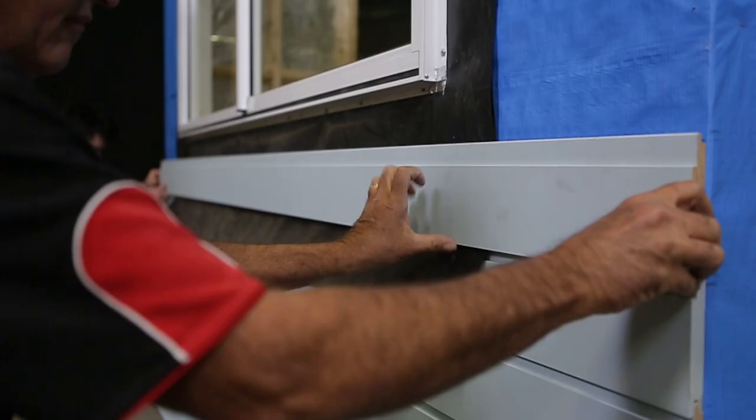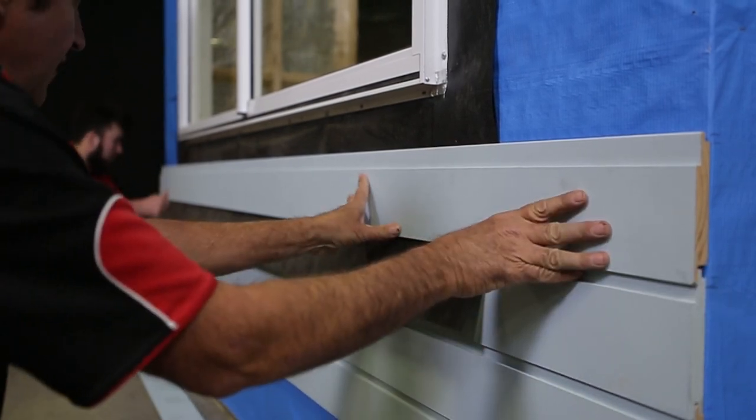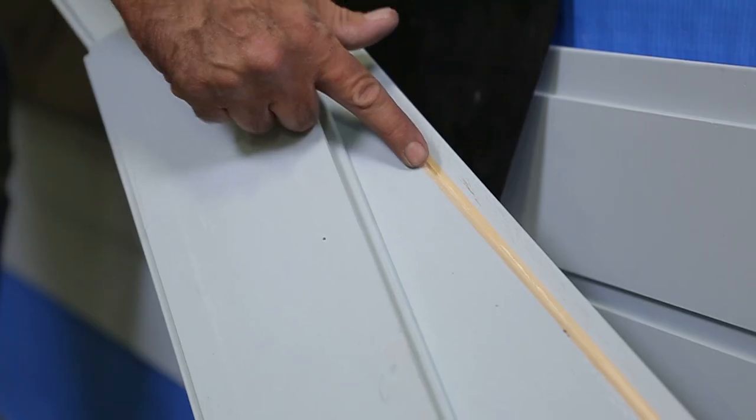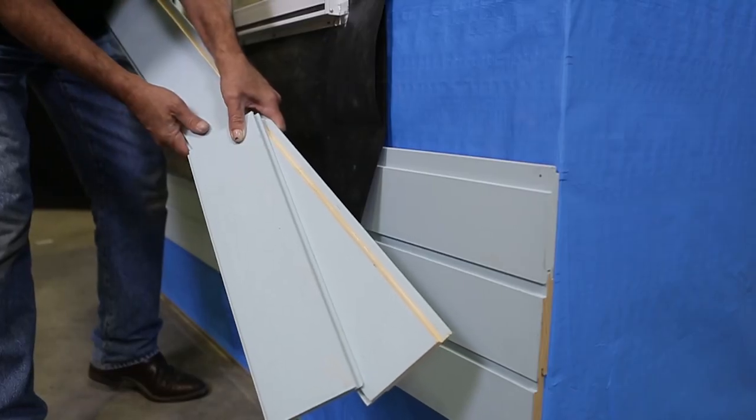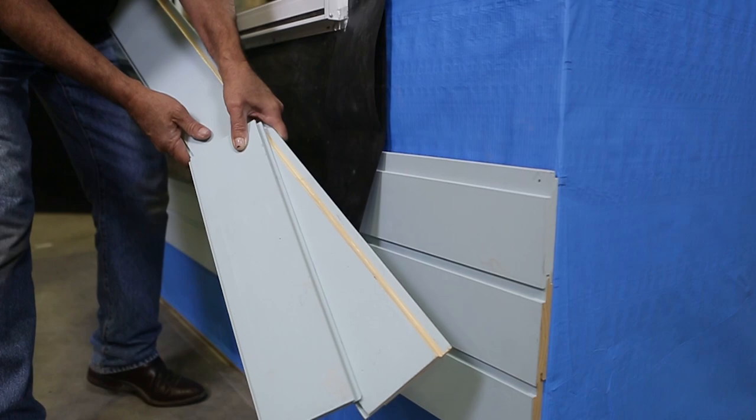Sill flashing should be laid into the cladding joints roughly two rows or up to 300 millimeters below the window. In this video we've modified the boards to allow for the flashing to drain two rows below the sill yet still look unobtrusive. This will vary with the different types of cladding used.